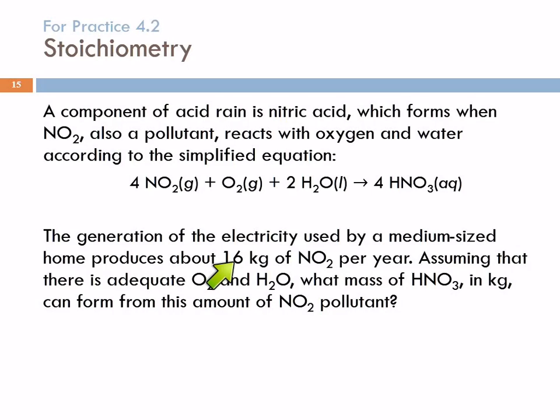So here we've got 16 kilograms of NO2. I'm going to use my balanced chemical equation to organize the numbers. So under NO2, I'm going to write the number 16 kilograms because that's what they're telling me. I've got 16 kilograms of NO2. Then they're saying, assuming there's plenty of oxygen and water, which in the air there probably is. The question is, what mass of HNO3 in kilograms can form from this amount of NO2?